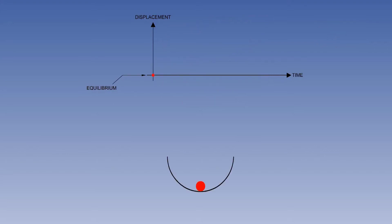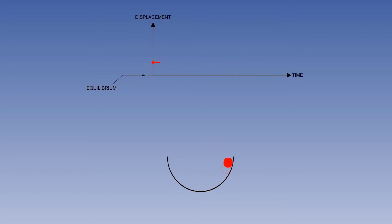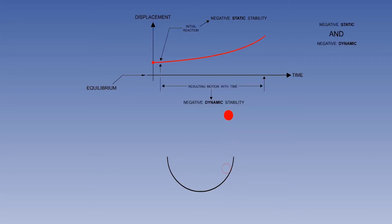Let's reset the graph and include the ball in the bowl. Displacement takes place, the disturbing force is removed, and the initial movement away from equilibrium begins. Over a period of time, a further movement from equilibrium takes place — an illustration of negative static and negative dynamic stability.